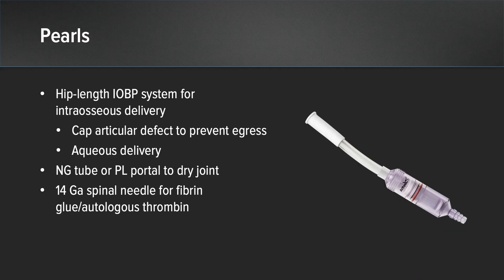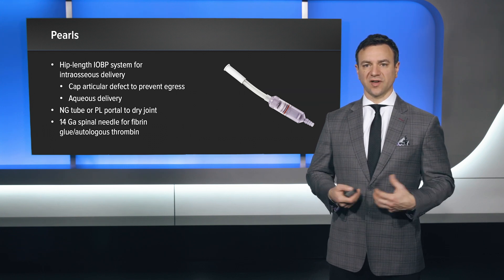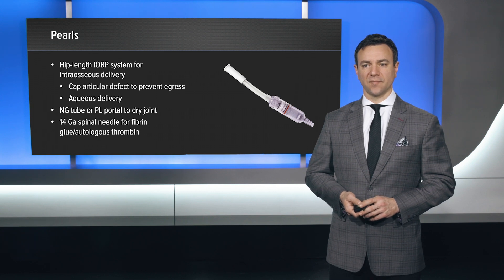A hip-length IOBP needle was used in this case because of the increased depth in the body habitus dimensions of the patient. This allowed for effective interosseous delivery of our bioactive substrate. We capped the articular cartilage to prevent egress. We did use an aqueous delivery into the cyst, while the biocartilage was delivered in a dry environment. Our preference is to use either an NG tube to evacuate residual fluid from the joint, or to create a posterolateral portal with suction-based pledgets or simple suction equipment through the posterolateral portal. A 14-gauge spinal needle was introduced through a distal accessory portal using fibrin glue or autologous thrombin to mature the graft construct in this particular case.